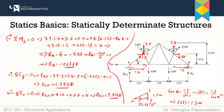One more point: when analyzing trusses, there are no concentrated moments. The reason is that moments applied at a hinge node would simply cause free rotation and would not transfer to the members. So trusses should only have point loads applied at the joints.